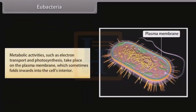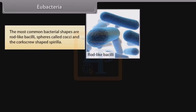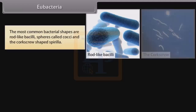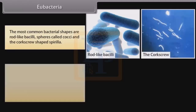Metabolic activities such as electron transport and photosynthesis take place on the plasma membrane, which sometimes folds inward into the cell's interior. The most common bacterial shapes are rod-like bacilli, spheres called cocci, and the corkscrew-shaped spirilla.